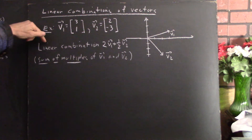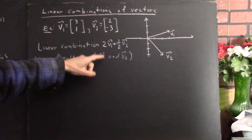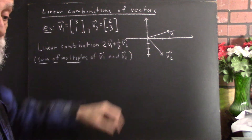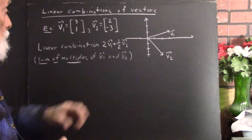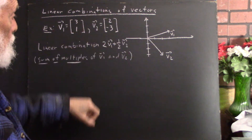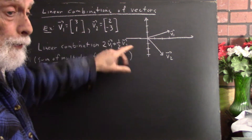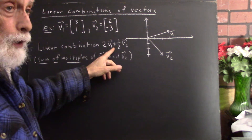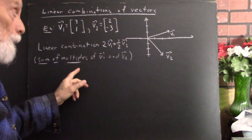Let's look at the linear combination 2v1 plus one-half v2. Well, 2v1 is a multiple of v1, and one-half v2 is a multiple of v2. And when we add them, we have a sum of multiples.